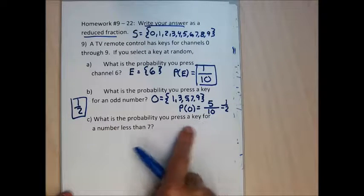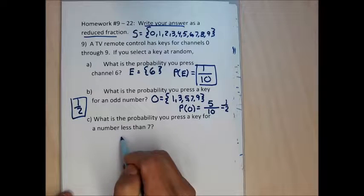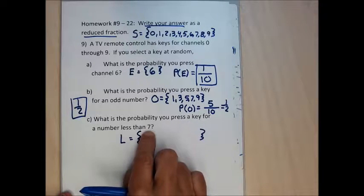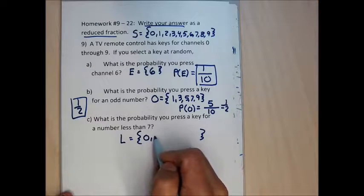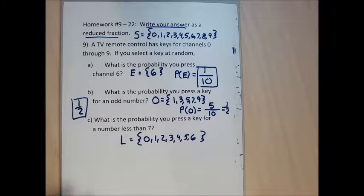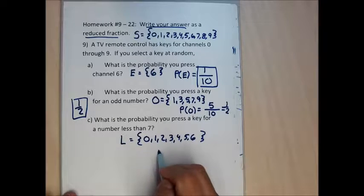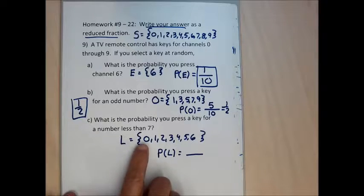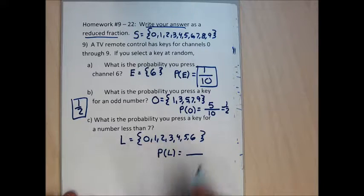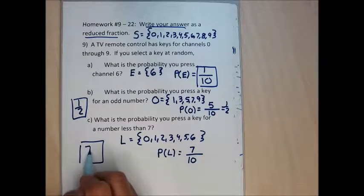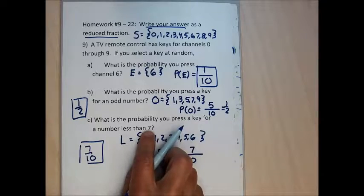Part C: what is the probability of pressing a key for a number less than seven? Create event L = {0, 1, 2, 3, 4, 5, 6} — seven elements. P(L) = 7/10.